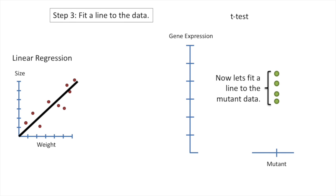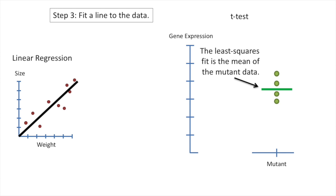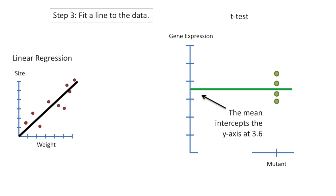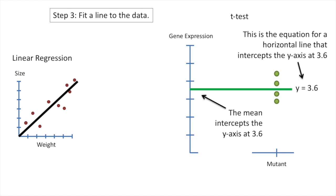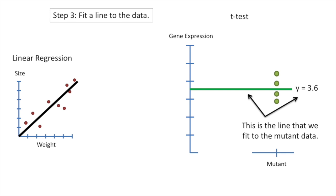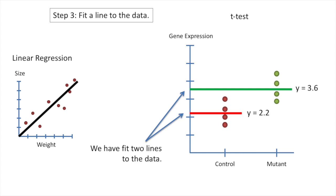Now let's fit a line to the mutant data. The least squares fit is the mean of the mutant data. The mean intercepts the y-axis at 3.6. This is the equation for a horizontal line that intercepts the y-axis at 3.6. Thus, this is the line that we fit to the mutant data. We have fit two lines to the data.